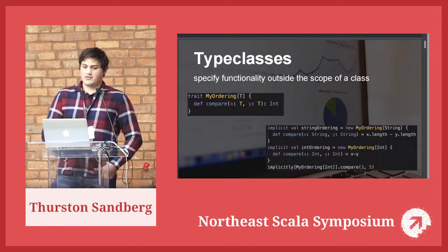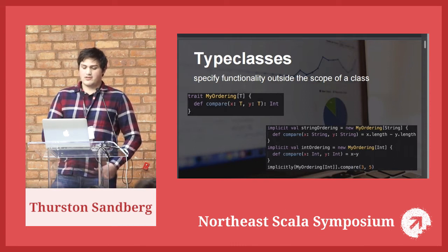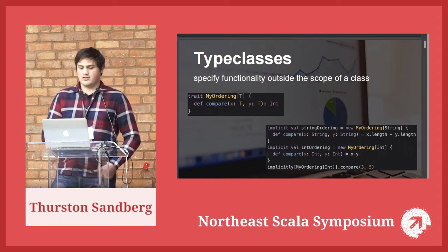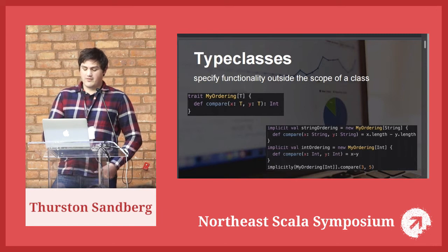Type classes are foundational to understanding recursive type classes. Type classes enable ad hoc polymorphism — meaning you can specify functionality for a given class outside the scope of that class. For example, Scala has a built-in ordering type class with defined instances for ints, longs, floats, and other types that don't have a comparison function built in but are inherently comparable. Defining these types for ordering adds that comparison functionality outside the scope of that class after the fact. That's the real power of type classes: anyone can add their own definitions to achieve the same functionality for any type.